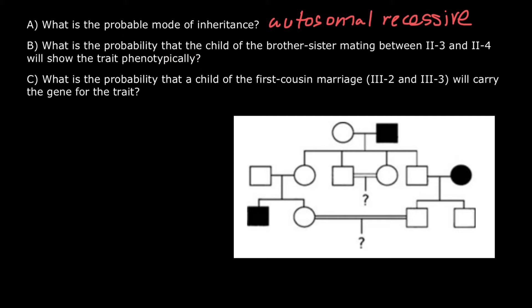Let's show the genotype of each person here. The genotype of this person, because he is affected, is going to be small a, small a. We assume that this person is phenotypically and genotypically normal. That gives us information that all children of this couple are going to inherit only a dominant allele from the mother's side and only a recessive allele from the father's side, and all of them have to be obligate carriers.